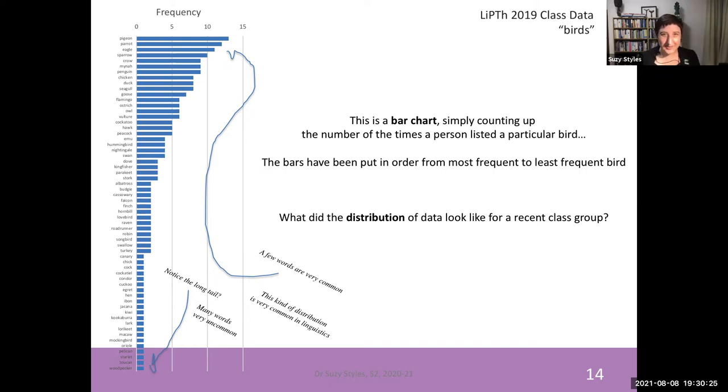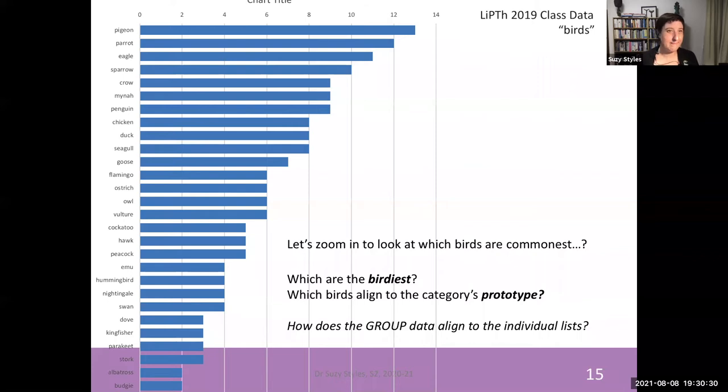Let's zoom in a little to see what this looks like in a bit more detail. So here we can see the zoomed in data and we can see that right at the top of the list we have pigeon. Singapore is a very urban environment for most of us most of the time so the birds that we are most likely to encounter are not robins but pigeons. We also have parrot and eagle and sparrow and crow followed by myna which is a very local bird to this environment.